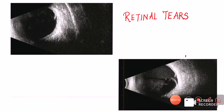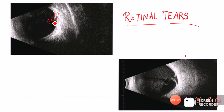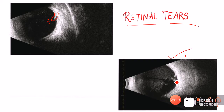Now let us see a few B-scan images of retinal tears. In the first image, there is a discontinuity in the retinal surface and the retina seems to be pulled a little bit forward — this is one case of retinal tear. In the second picture, we are also seeing diffuse vitreous opacities present in the vitreous gel. This is nothing but an acute retinal tear that has bled into the vitreous cavity — a vitreous hemorrhage.